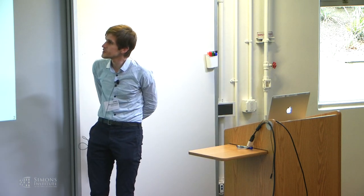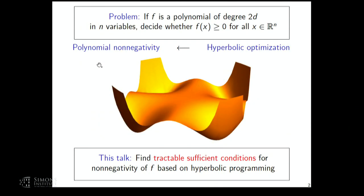What is this talk about? At some level, I'm interested in the basic problem of deciding whether a multivariate polynomial with real coefficients is non-negative globally. That's the basic underlying question in the back of our minds for this talk. The main idea I want to put forward is one approach for trying to come up with certificates of non-negativity of a multivariate polynomial, where I can search for them via hyperbolic optimization, by solving a hyperbolic optimization problem.